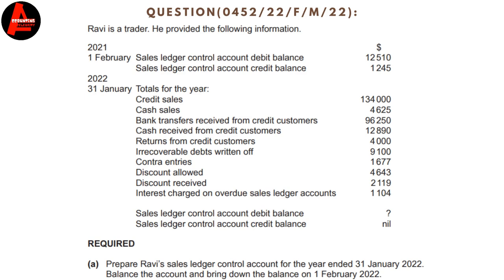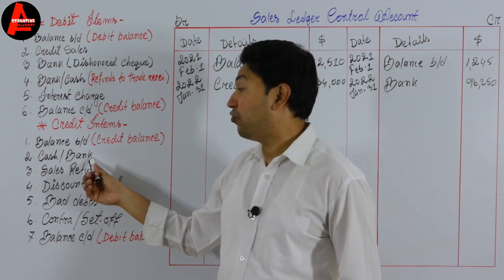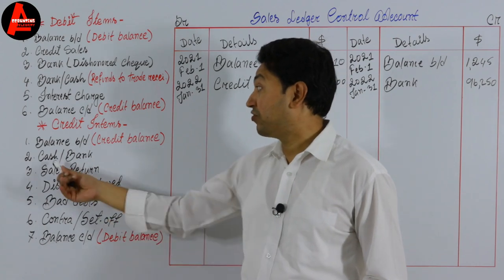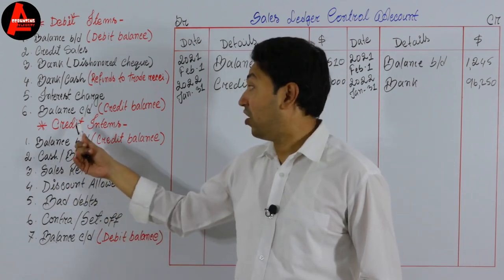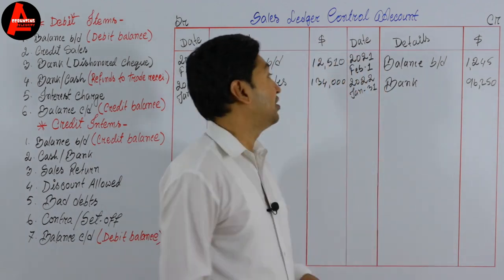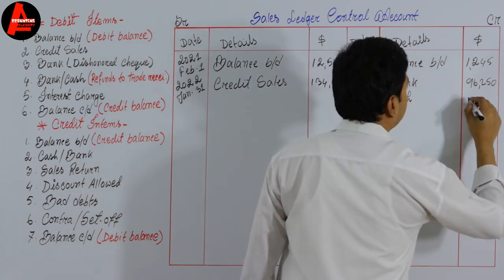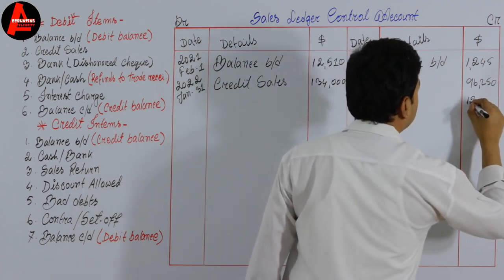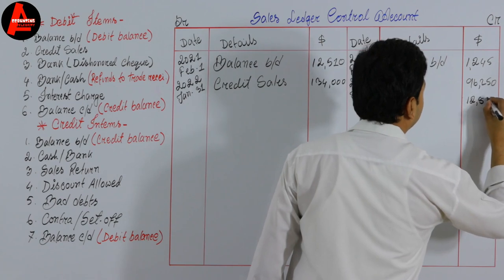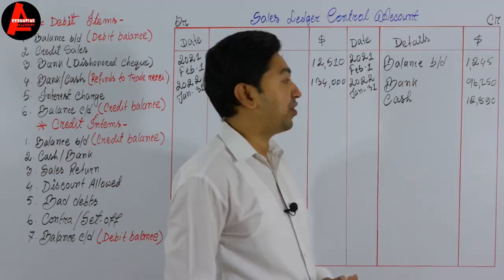Next is cash received from credit customers: $12,890. When you receive payment by bank you write 'bank'; when received in cash you write 'cash' — both go on the credit side, as they are credit items. So we write the same date and record cash: $12,890.